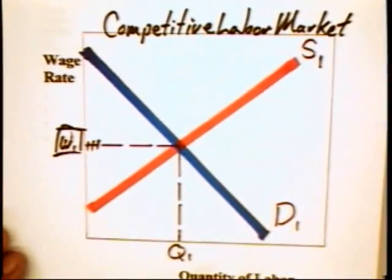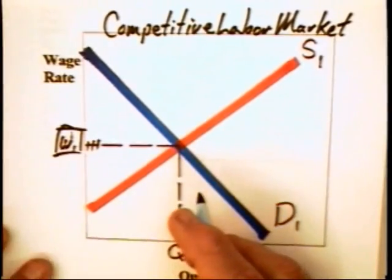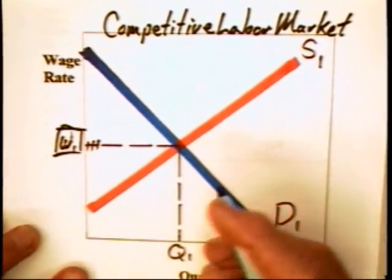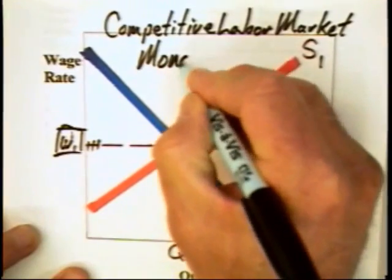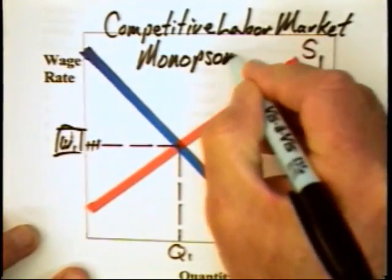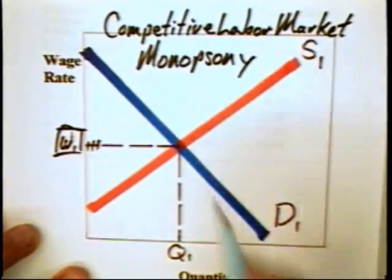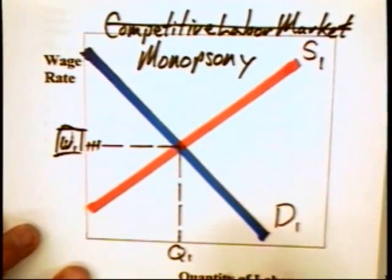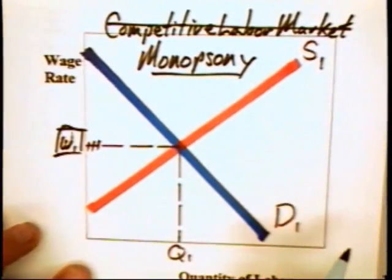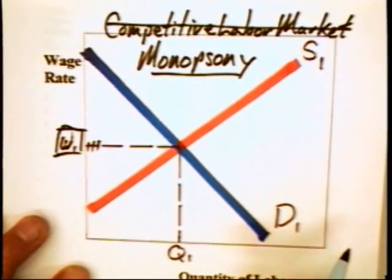Suppose we move into a market that is totally dominated by one employer — this would be a monopsony labor market. A monopsony stands as a stark distinction to monopoly. A monopoly is a single seller of a product; a monopsony is a single buyer of a resource input, such as labor.